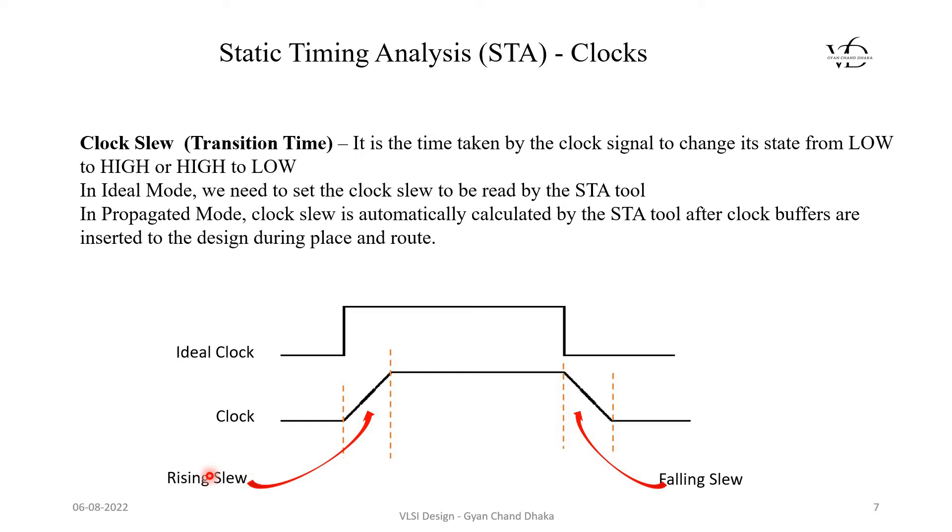When the clock transitions from high to low, this is called falling slew. In ideal mode, this is our ideal clock, but in propagated mode, which you can see as the practical scenario, the clock behavior is different.